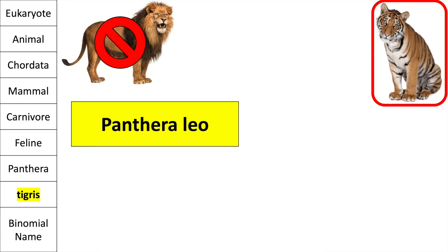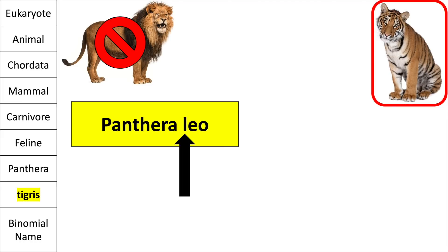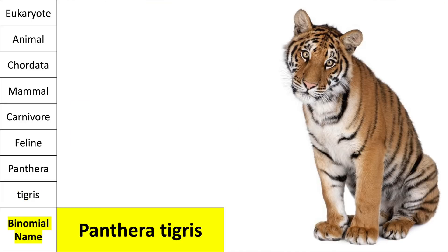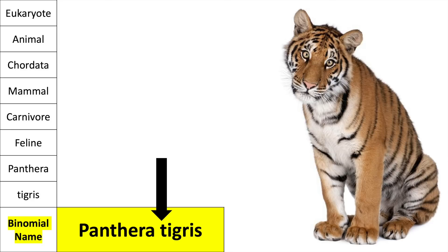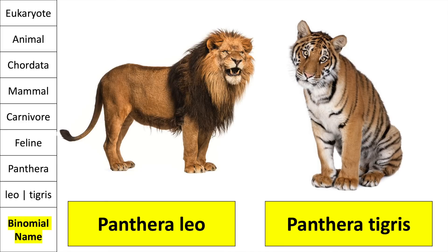The lion is called Panthera leo, which is its binomial name — Panthera being the genus with an uppercase P, and leo being the species with a lowercase l. The binomial name for the tiger is Panthera tigris — Panthera with a capital P being its genus, and tigris being its species with a lowercase t. The lion is Panthera leo and the tiger is Panthera tigris, and they are two different species.